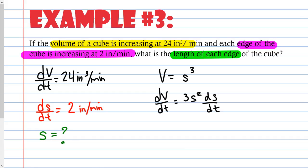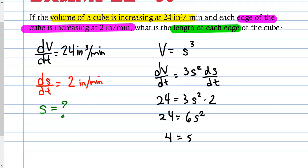Plug in the stuff you have. dV/dt is 24. ds/dt is 2. I don't have s — that's what I'm looking for. So: 24 = 3s² × 2, which simplifies to 24 = 6s². Divide both sides by 6: 4 = s². Square root both sides: s = 2. Not negative 2 — because this is a length, and in the real world we do not have negative lengths. The side measurement is 2 inches.